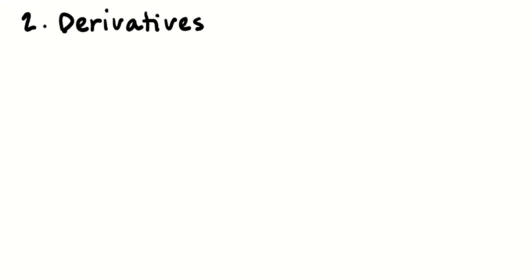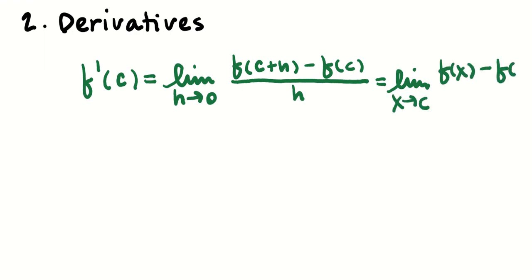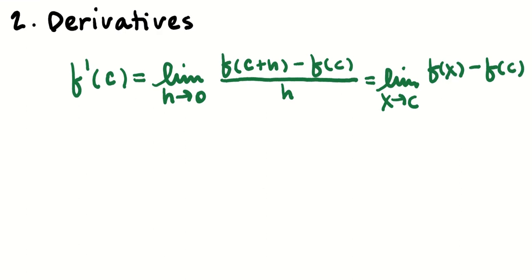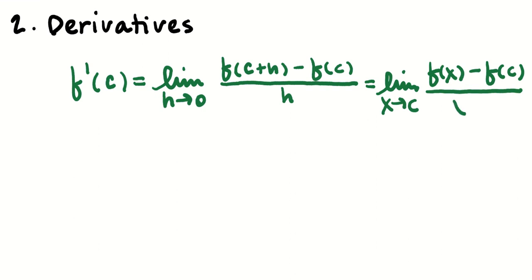Then we started talking about derivatives. The definition of the derivative is a limit of rise over run as run goes toward 0. We also have an alternative definition — the derivative at a point as the limit as x approaches c of [f(x) − f(c)] / (x − c), which gives the slope of a curve at one x value.